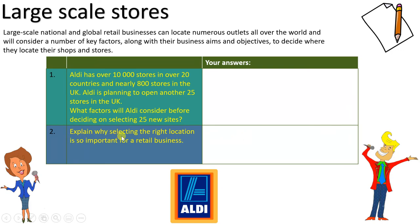Question two: explain why selecting the right location is so important for a retail business. This is where you recall the discussion from earlier in the lesson — particularly slide five. The phrase to keep in mind is: how does it serve the community? It's about how the location helps get customers there, but also what the community offers the retailer to make it attractive to customers. It's a two-way situation between the community and the retailer that you need to capture in your answer.